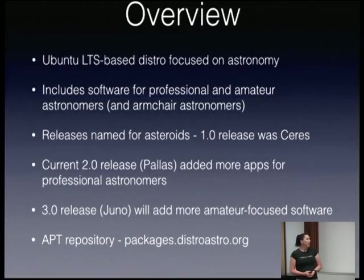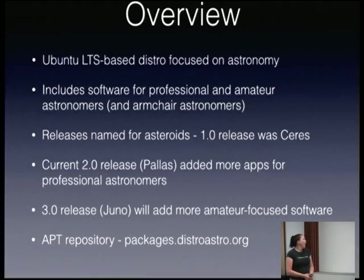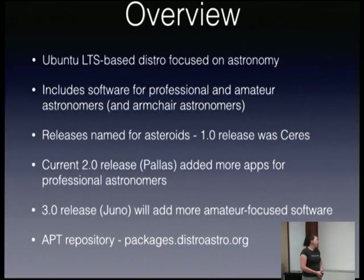They're following a naming strategy for releases based around asteroids. The first 1.0 release was Ceres. They're actually skipping a standard 1.0, 2.0, 3.0 release cycle, which is interesting. The current release, just released a month or two ago, is called Pallas. The forthcoming release will be called Juno, and as I said, that's going to be focused on putting in more software aimed at amateur astronomers.